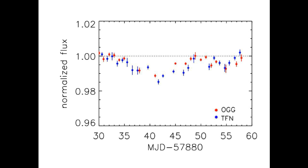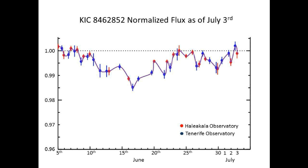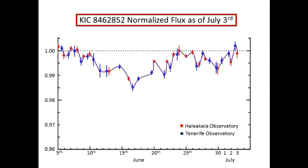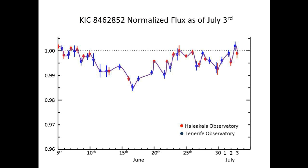This is the normalized flux graph provided by Dr. Boagian, and we made it a little bit more readable. This is today's normalized flux graph of Tabby's Star. There are two different observatory measurements taken and included in this graph. The red data points are from the Hawaiian Observatory and the blue ones are from the Spanish Observatory.